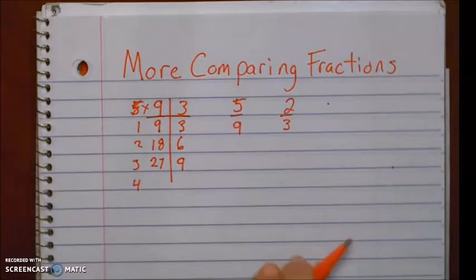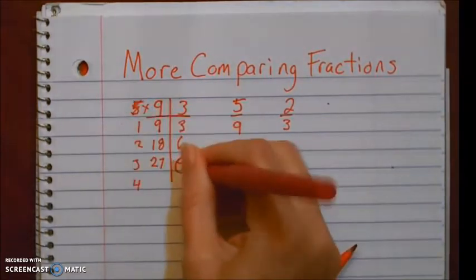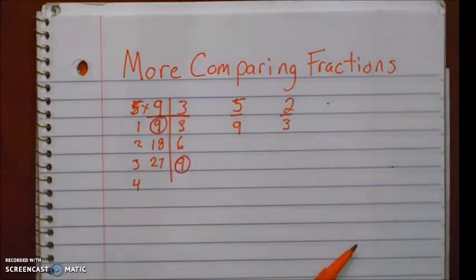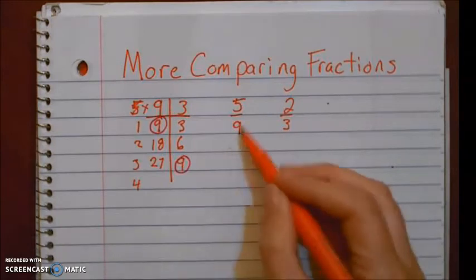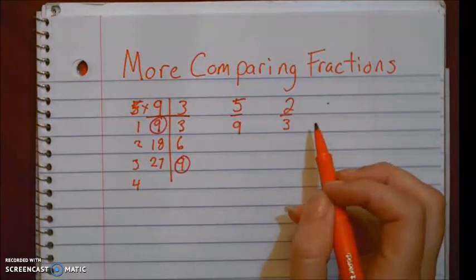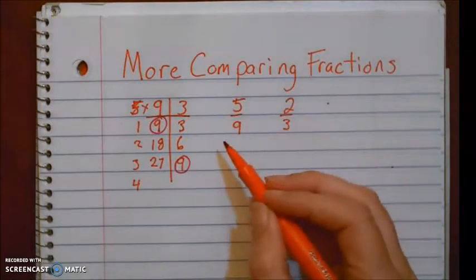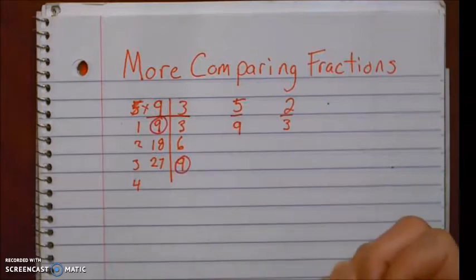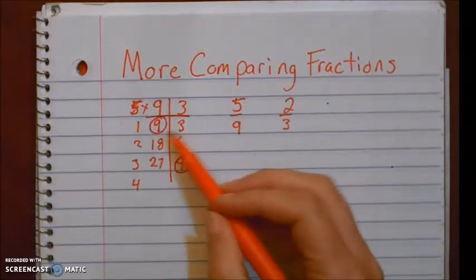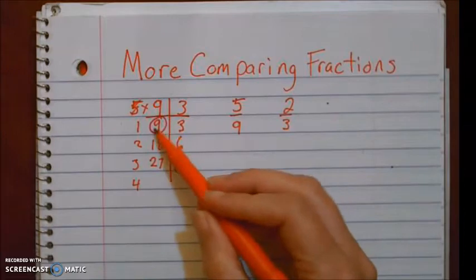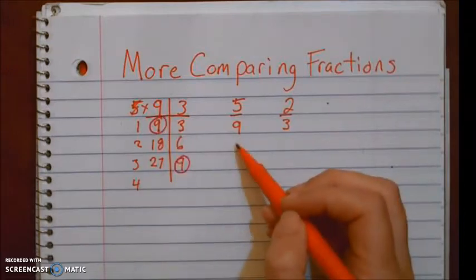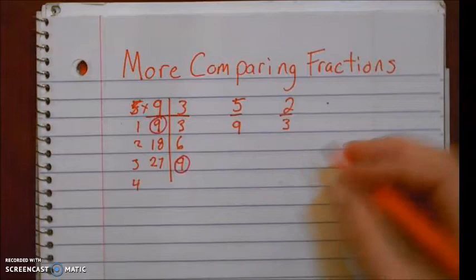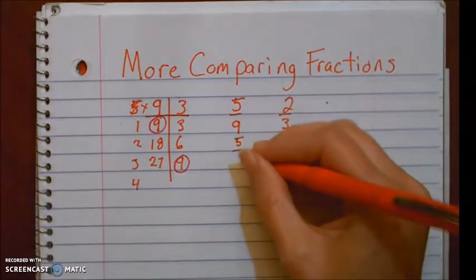Here's where I can stop because I see that I have a common factor. I have a nine here and a nine here. Now if you know your facts well enough to know that nine is a multiple of three, that three times something will give you nine, all you have to do is think three times what gives me nine and you can leave the five ninths alone. Now because our nine is our denominator, we're not going to do anything to this fraction. It's going to stay five ninths.